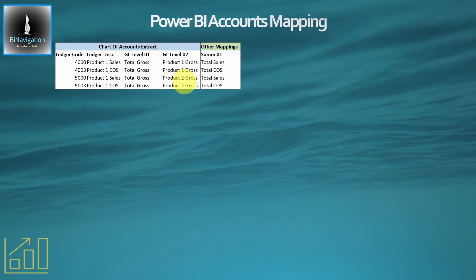An example might be payroll or wages costs, where some of those wages costs are in cost of sales and some are in expenses. You can pull all of those together with another column here saying these are the ledger codes that make up my wages.